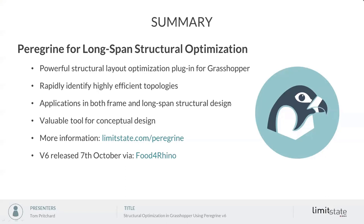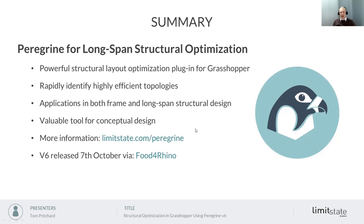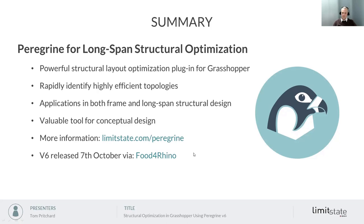Peregrine for long-span structural optimization can help rapidly identify highly efficient topologies. It has applications in both frame and long-span structural design and is a valuable tool for working out conceptual designs. More information is available at limitstate.com/Peregrine. Version 6 will be released Thursday the 7th of October and can be downloaded via Food for Rhino.